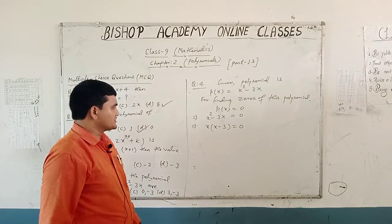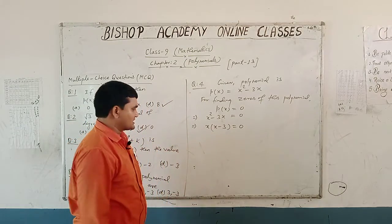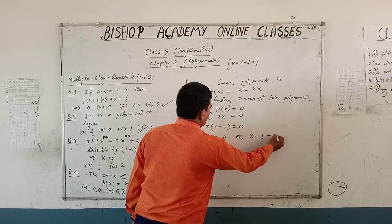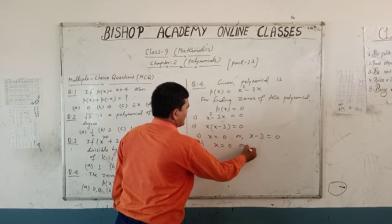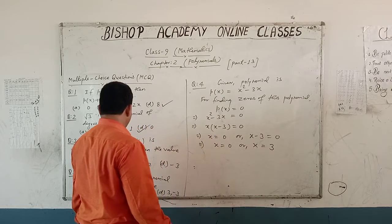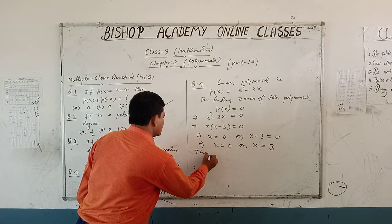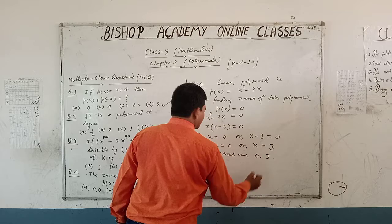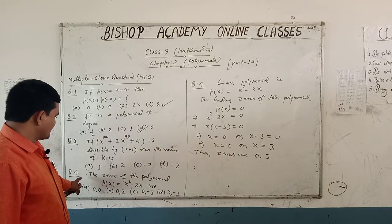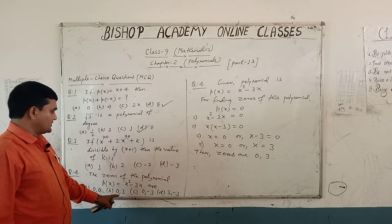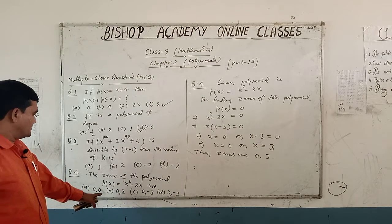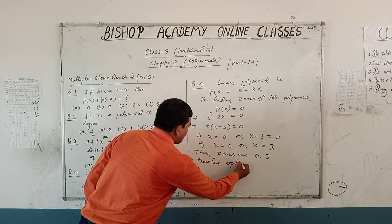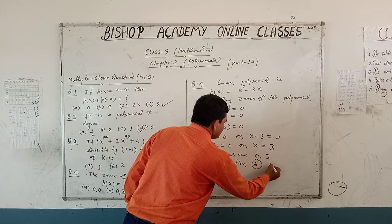Here x is common, so we write x(x minus 3) is equal to 0. The product of two terms is zero means first equal to 0 and second equal to 0 — that is x equal to 0 and x minus 3 equal to 0, which implies x equal to 0 or x equal to 3. Then zeros are 0 and 3. Here we see 0, 3 is in option number B. Therefore option B is correct.